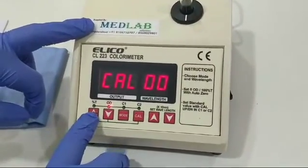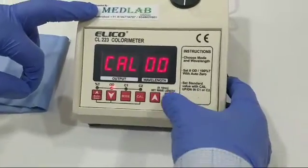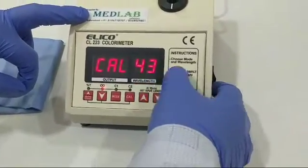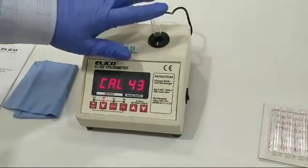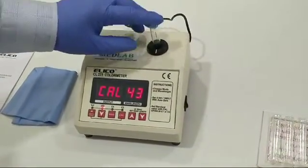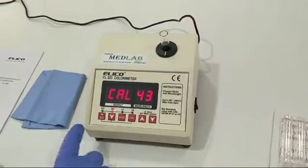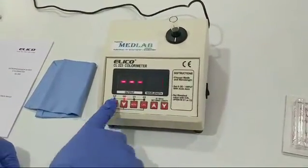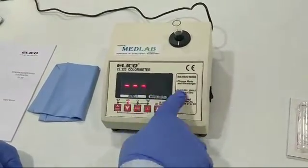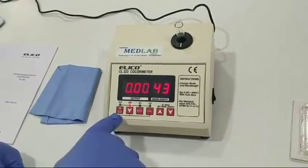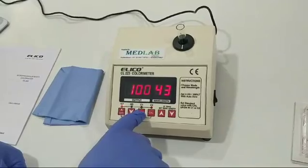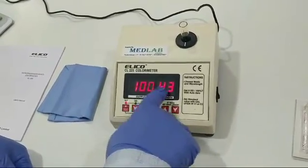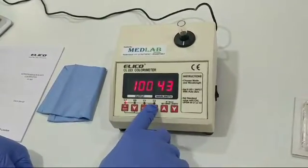Once you have selected the wavelength, suppose you select 430nm, you will insert water into the cuvette. After inserting, you will press auto zero. For 430nm wavelength, the OD will become zero and the transmission will be 100%.